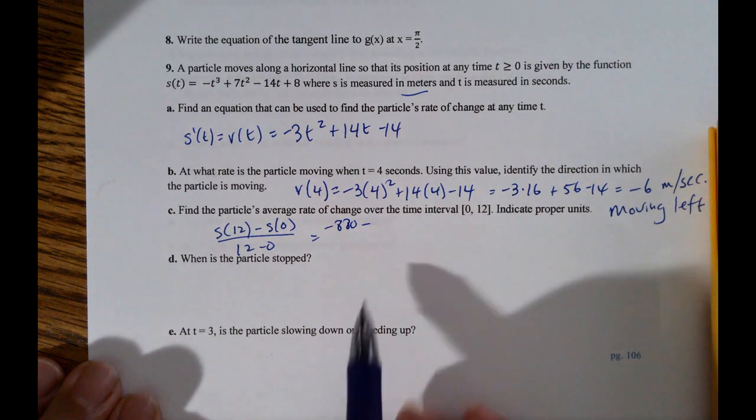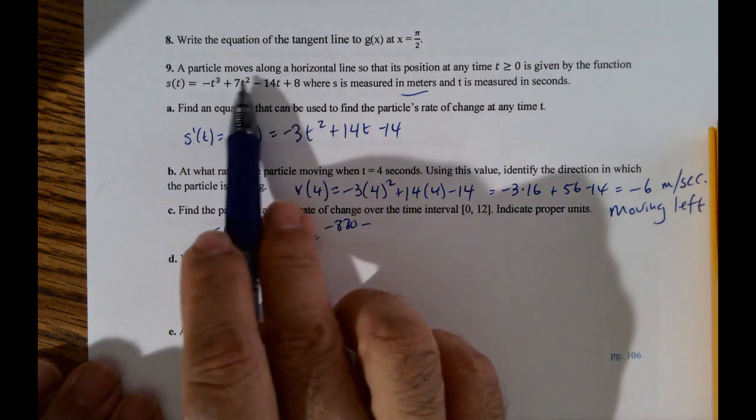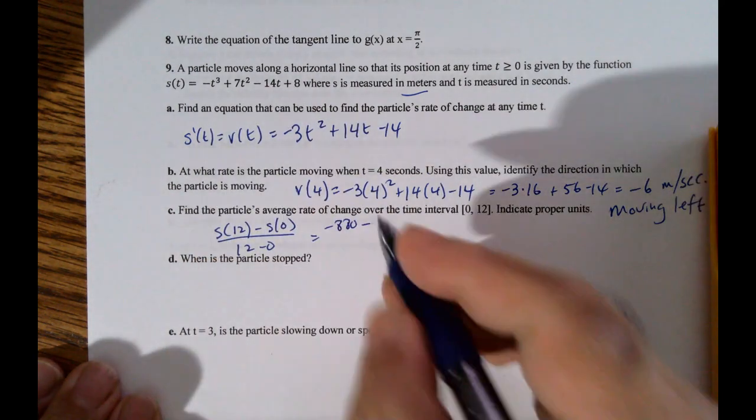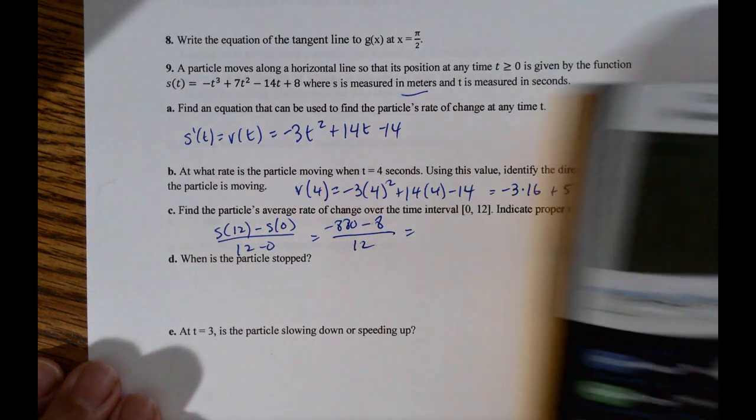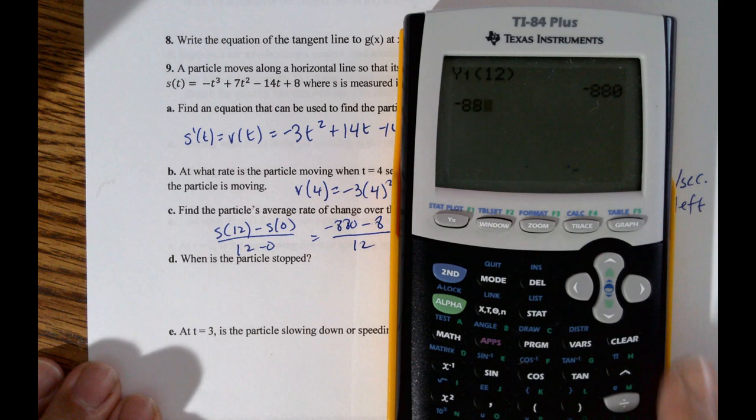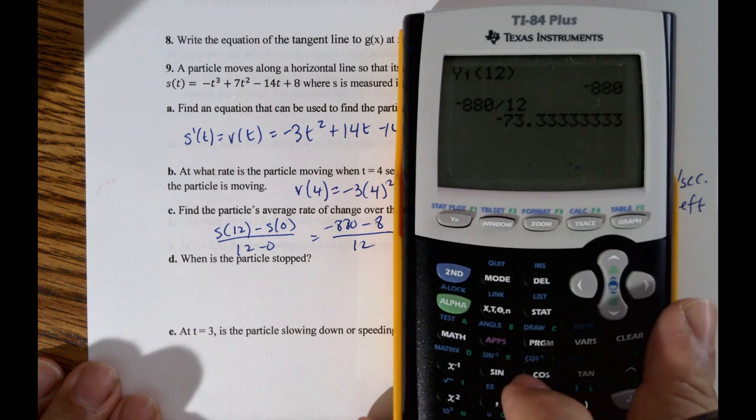And then s sub 0, that should be easy, right? You just plug in 0 into that expression. So that's just 0 over 12.